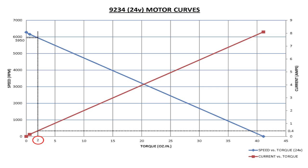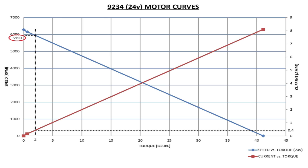I've applied a two ounce inch torque load to the motor shaft. The motor is slowed to 5950 rpm. The motor compensates by drawing 0.4 amps of current.